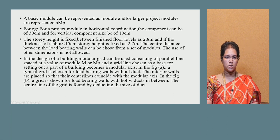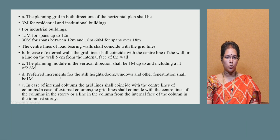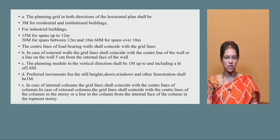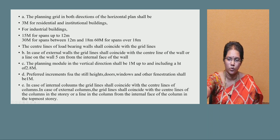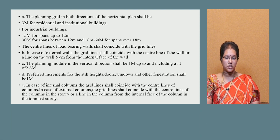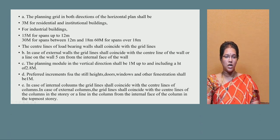Standard dimensions are considered: for industrial buildings, 15M for spans up to 12 meters, 30M for spans of 12 to 18 meters, and 60M for spans over 18 meters. For residential buildings, 3M is the planning module. Vertical planning shall be 1M, with height up to 2.5 meters. Doors and windows fall under 1M. For interior columns, grid lines coincide with column centerlines; for exterior columns, grid lines coincide with the column face interface.